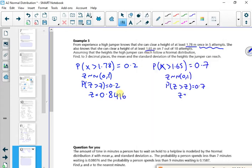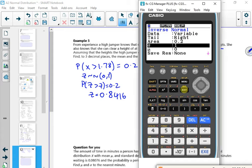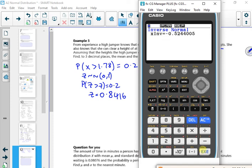Do this one for 0.7. I've got minus 0.5244.